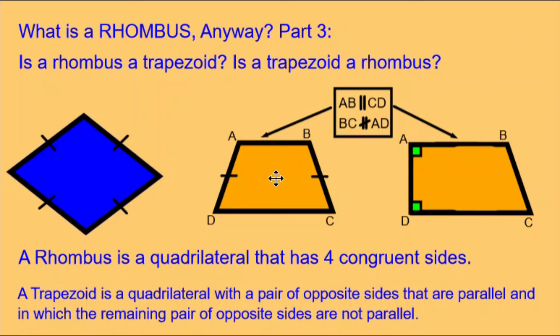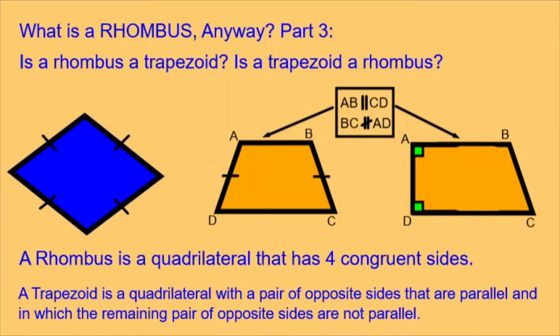So the answers to today's questions are no. A rhombus is never a trapezoid and a trapezoid is never a rhombus, so long as we are using the exclusive definition of a trapezoid.